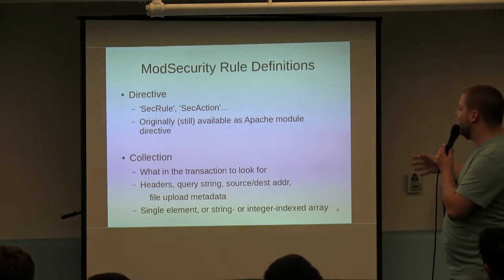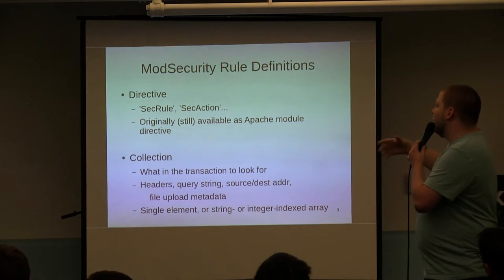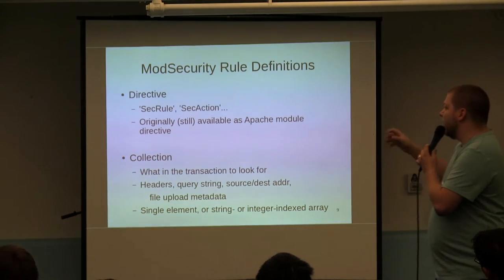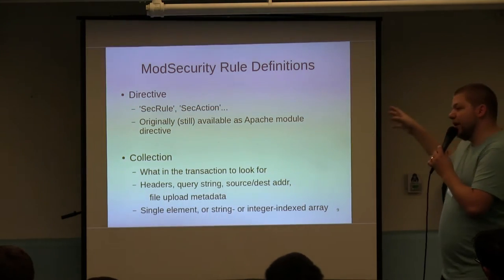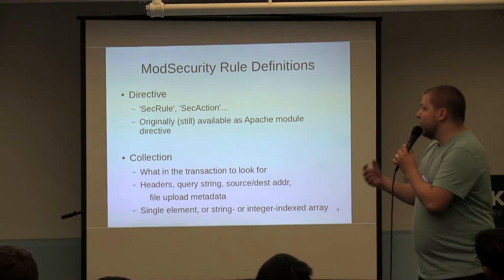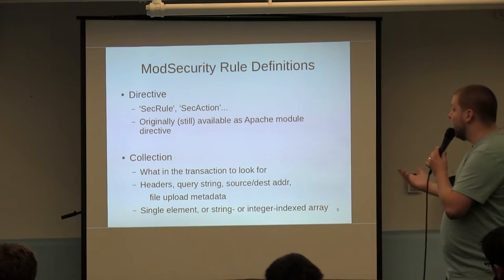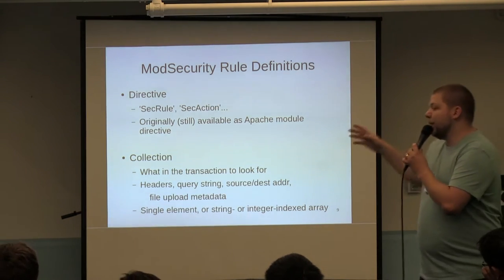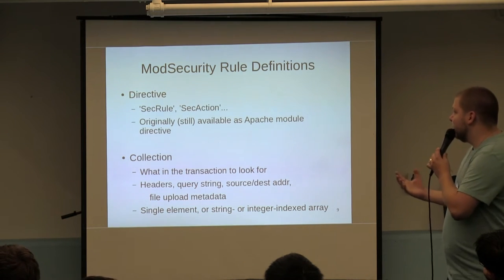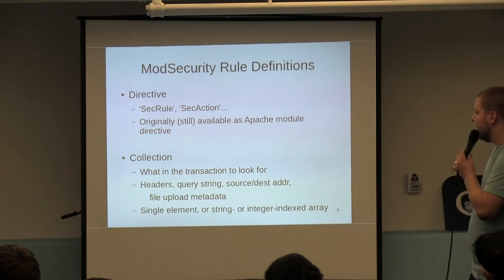There are four parts to a ModSecurity rule definition. The first part is the directive — generally this is SecRule or SecAction — that defines how Apache is going to interact with the request. Because these were originally written as Apache configuration directives, you can stick them directly inside your Apache config. Porting that to other platforms like Nginx or other web servers makes that kind of problematic, because you have a WAF written for one particular environment, but as its use has evolved, people want to support it for Nginx and other environments where the configuration doesn't always work out.